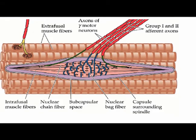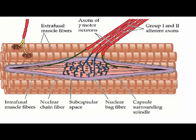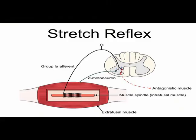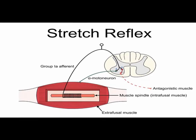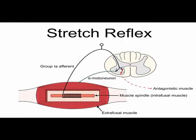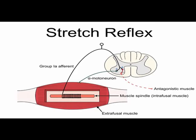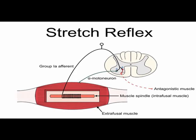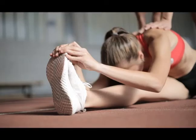The stretch sensation is measured by two types of afferents: primary, which is type 1a, and secondary, which is type 2. There is a single 1a fiber and anywhere between 0 to 5 type 2 fibers per spindle. The 1a fiber supplies all intrafusal fibers in the spindle at the equatorial region.